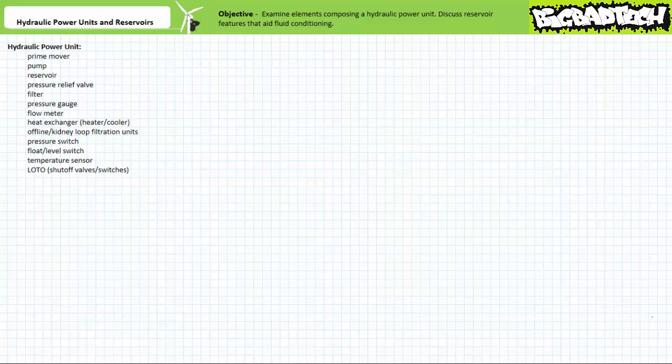A hydraulic power unit can also include some ancillary or supporting elements, though not essential to the system, add some serious bling. Cool points go to hydraulic power units with integrated pressure gauges, flow meters, heat exchangers like heaters and coolers, offline or kidney loop filtration units, and sensory apparatus like pressure and float level switches and temperature sensors. Finally, a hydraulic power unit may also include lockout and tagout devices like shutoff valves or electrical shutoffs. You're probably familiar with most of these elements already, but since they perform essential roles, let's do a brief review.